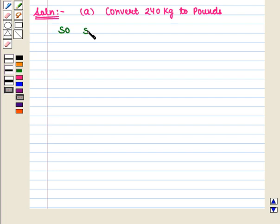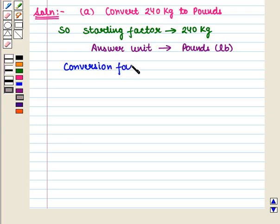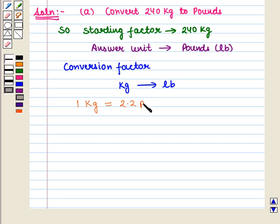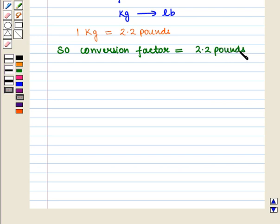So the starting factor is equal to 240 kilograms. The answer unit will be in pounds, and we have to find the conversion factor to convert kilograms to pounds. Now we know that 1 kilogram is equal to 2.2 pounds. So the conversion factor will be equal to 2.2 pounds upon 1 kilogram.